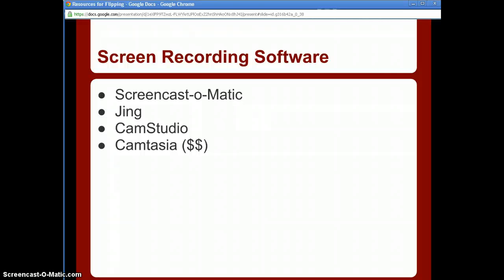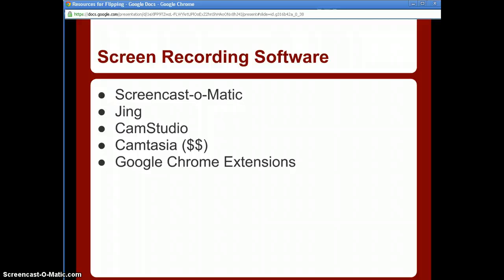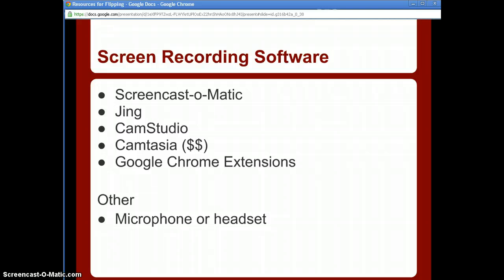Camtasia allows you to do a lot of things that the free options don't. There are also Google Chrome extensions that will record what goes on in your browser — search the Chrome Web Store for extensions or plugins, especially if you're doing a lot of internet-based content. If you go the screen recording route, invest in a microphone or headset; don't rely on your computer's built-in mic. There's a lot of background noise and you can sound very far away. Search Amazon for a USB headset — 10 to 15 dollars will get you a decent one.